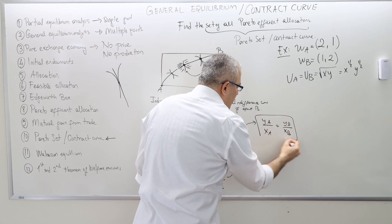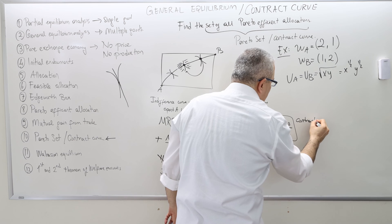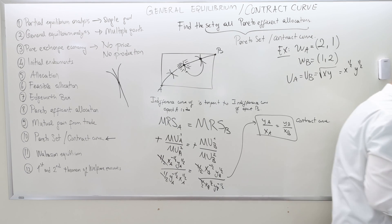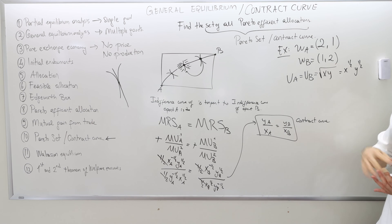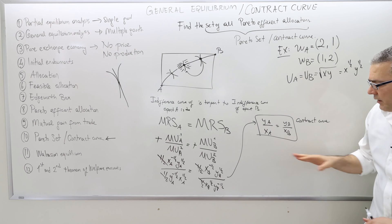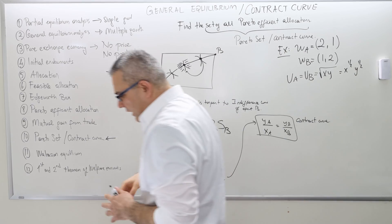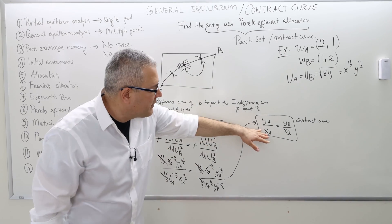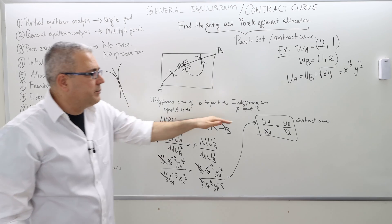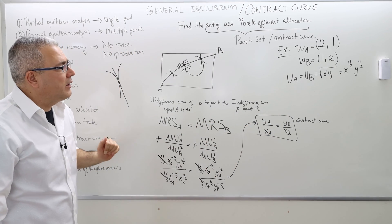So the contract curve is YA/XA = YB/XB. In this example, the marginal rate of substitution for agent A is Y over X, and for agent B it is her Y over her X.